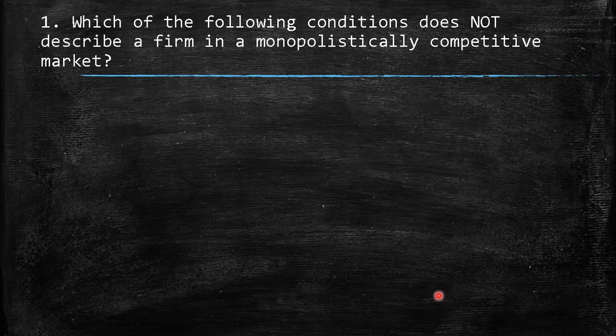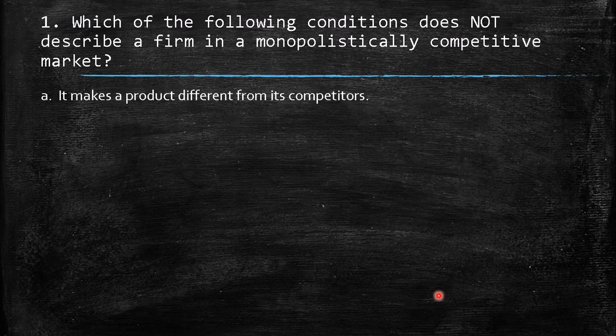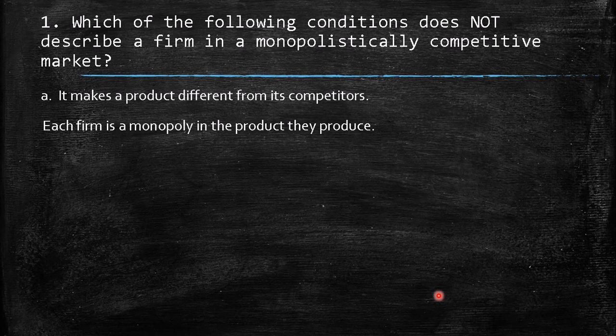The first question asks: which of the following conditions does NOT describe a firm in a monopolistically competitive market? The first option says it makes a product different from its competitors. When we talk about the monopolistic competitive market, each firm is essentially a monopolist for its own product — the products are different, even slightly, from one to another. This is the basic idea of monopolistic competition, where we talk about heterogeneous goods.